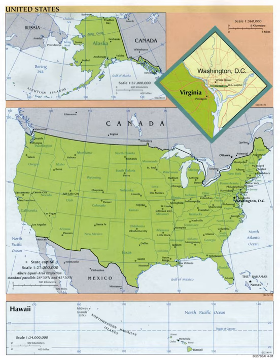The United States also holds several other territories, districts, and possessions. As these jurisdictions are not part of one of the various states, sovereignty of them rests solely with Congress, and they are governed by Congress in accord with its plenary power under Article 4, Section 3, Clause 2 of the U.S. Constitution. This governing power includes extraterritorial jurisdiction in overseas military installations, American embassies and consulates located in foreign countries, and research centers and field camps in Antarctica. Additionally, it exercises concurrent jurisdiction to varying degrees with the states in many domestic federal enclaves.